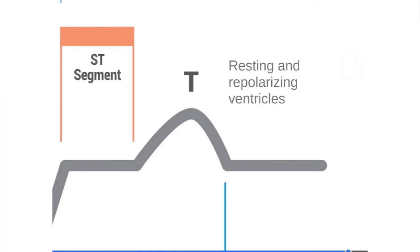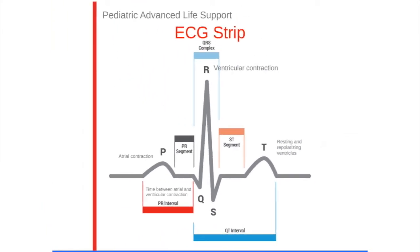The atria repolarize also, but this coincides with the QRS complex, and therefore cannot be observed on the ECG strip. Together, a P wave, QRS complex, and T wave are indicative of normal sinus rhythm, or NSR. Here's a summary and picture of the ECG strip — feel free to pause it here to study this slide.